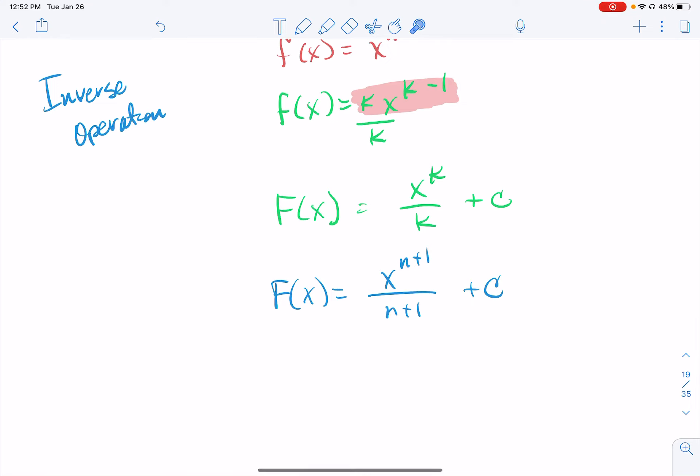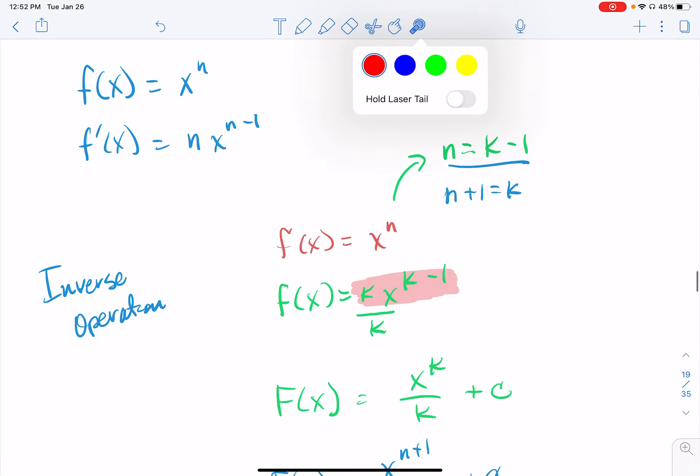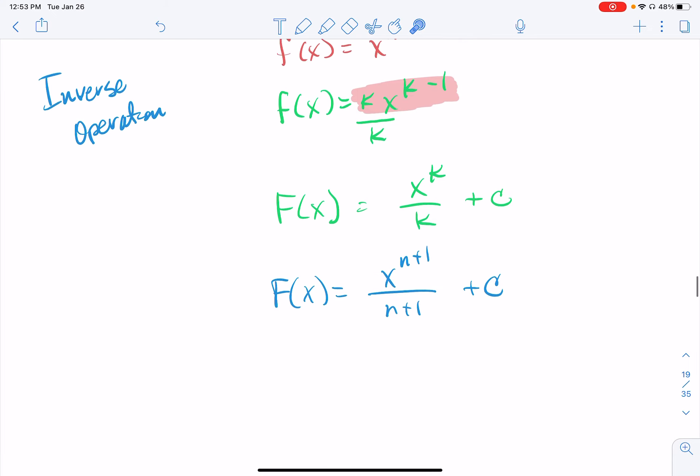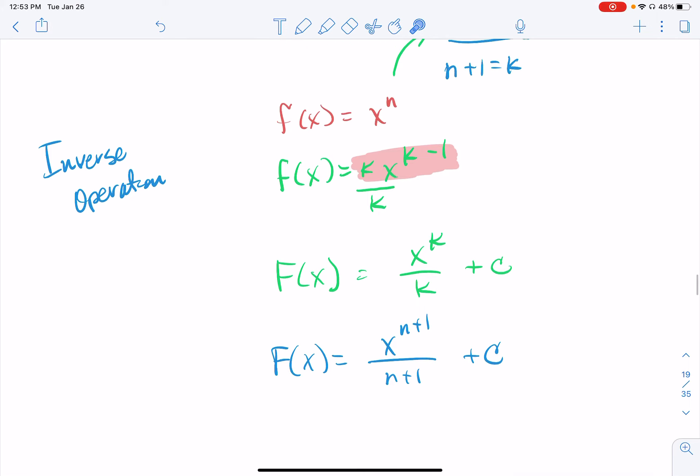When I take the derivative, I multiply by some sort of coefficient. And when I take the antiderivative, I'm going to divide by that coefficient. So try to make connections like that. It's going to make it a heck of a lot easier for you to remember these antidifferentiation rules.